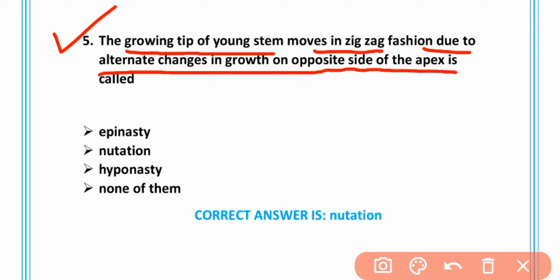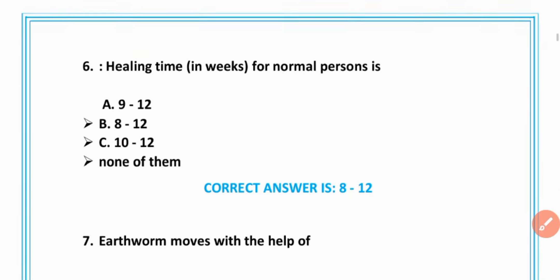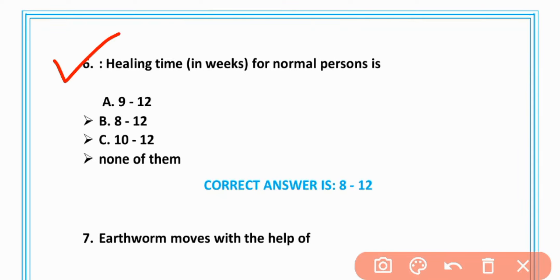Nutation, option B is correct. MCQ number 6: Healing time in weeks for normal person is 8 to 12 weeks, B is correct.